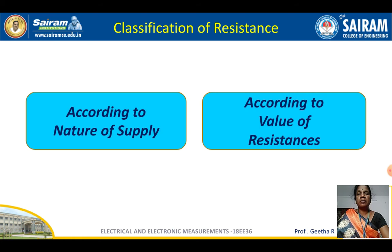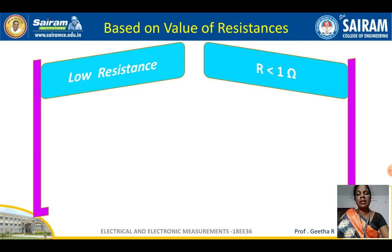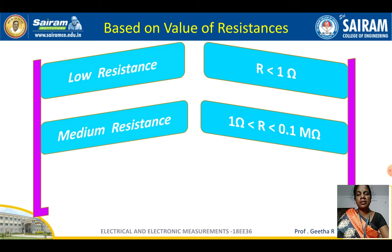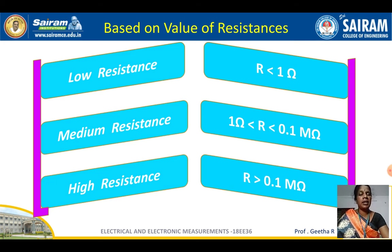According to the value of resistance, it can be classified as low resistance, medium resistance, and high resistance. Resistance with a value less than 1 ohm is called low resistance. Resistance with a value between 1 ohm and 0.1 megaohm (100 kilohms) is called medium resistance. Resistance greater than 0.1 megaohm — that is, greater than 100 kilohms — is called high resistance.